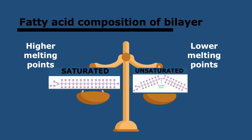The bilayer can have different compositions depending on the fatty acids in it. Saturated fatty acids have straight chains, so they pack very tightly in bilayers, reducing the fluidity of the membrane and giving them higher melting points. Unsaturated fatty acids have kinks in them which make them pack much more loosely, making the membranes more fluid, flexible, and permeable, and giving them lower melting points. The relative amounts of each need to be regulated so that membranes have the required properties — they must be permeable but not too permeable.